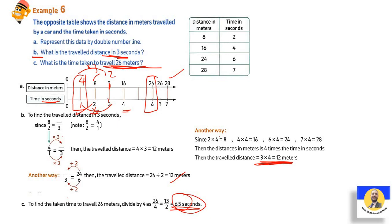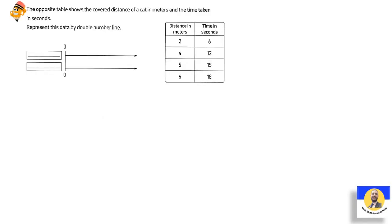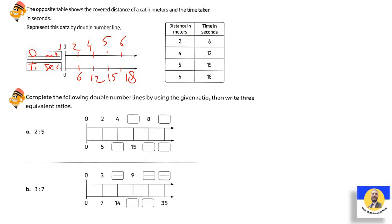Another one: The opposite table shows the covered distance of a cat in meters and the time taken in seconds. Represent this data by double number line. We write here distance in meters and here time in seconds. After that, start to do here: first, second, third, fourth. We can write here 2:6, 4:12, 5:15, and 6:18. We made the number line, we made the numbers opposite together.